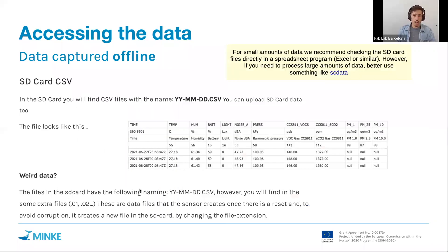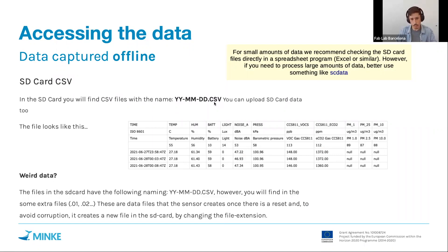If you capture data offline, the data is available inside the microSD card on the kit in CSV format. There are many files — one per day — in the format shown on screen.